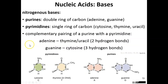The nitrogenous bases include two purines — adenine and guanine — which are double rings. Then we have three pyrimidines, which are single rings: cytosine, thymine, and uracil. Uracil is only found in RNA, and thymine is only found in DNA.